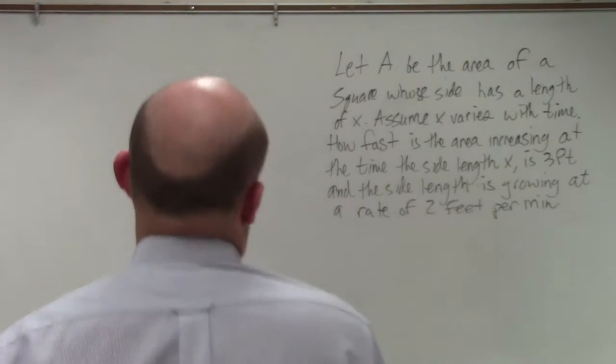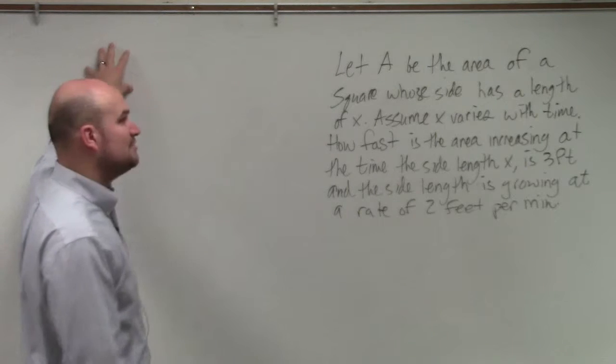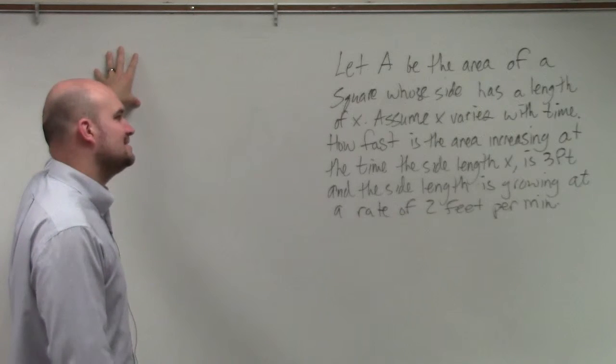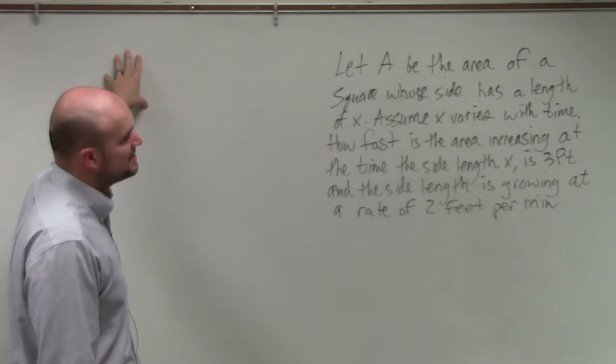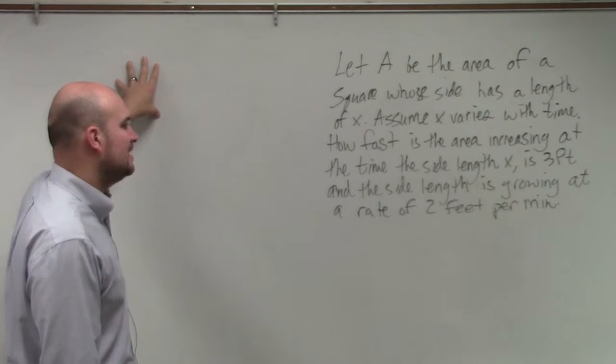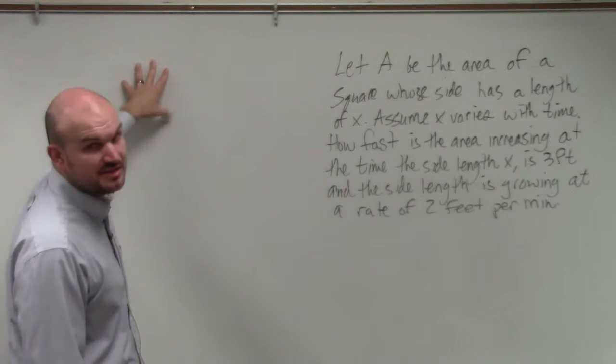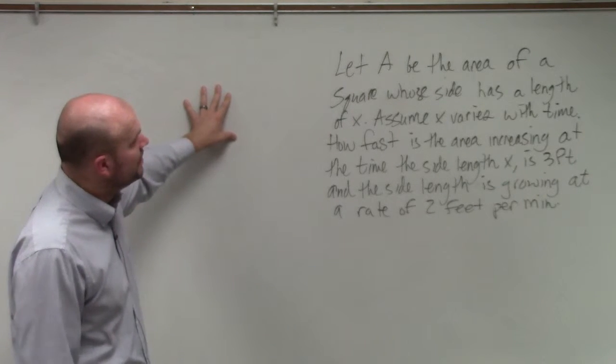So it says, let A be the area of a square whose side has a length of X. Assume X varies with time. How fast is the area increasing at the time the side length X is 3 feet and the side length is growing at a rate of 2 feet per minute? So there's a couple things we need to understand when I'm looking at this.